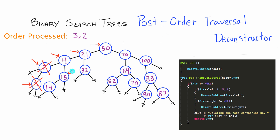The remove subtree function called with a pointer to node 15 checks for a left child and finds one, so it calls remove subtree with a pointer to node 14. Node 14 does not have a left child and does not have a right child, so it deletes node 14. Node 15 then checks right, finds no right child, and deletes node 15. We fall back to node 4, which has already looked left and right, so node 4's memory is deallocated next. We then fall back to node 21.